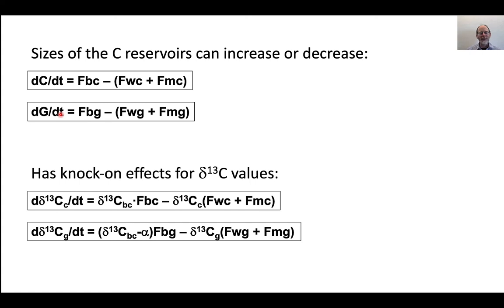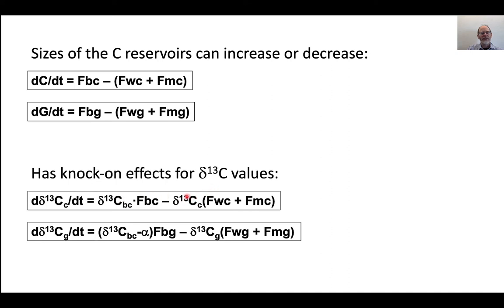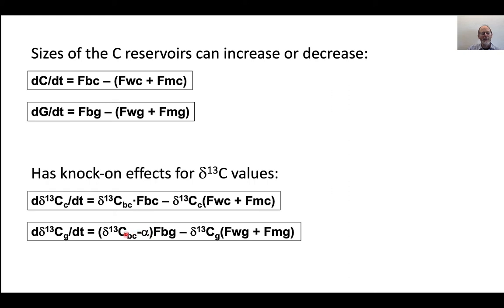That's one way to keep the Earth from getting into a runaway system. This also has knock-on effects for the carbon isotope compositions. If you're changing the size of a carbon reservoir, then the change in its isotope composition has to be balanced by the fluxes into and out of those reservoirs times the delta C-13 values of the carbon that's coming in. There's a comparable mass balance equation for organic carbon, including the difference between organic carbon and carbonate.